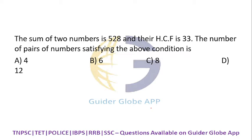The sum of two numbers is 528 and their HCF is 33. The number of pairs - HCF is 33, that means the numbers should be 33a and 33b. This total is equivalent to 528.